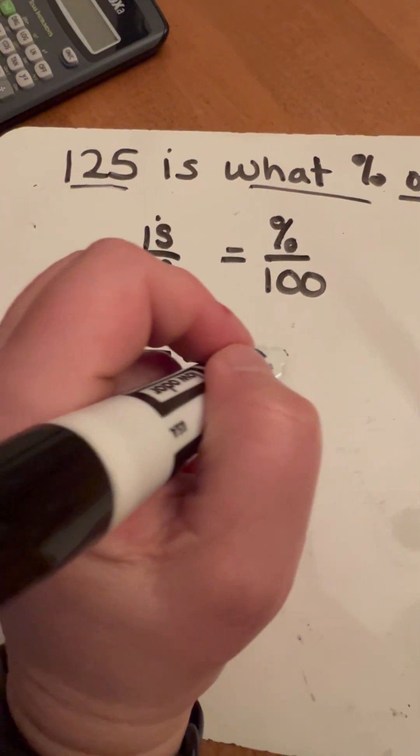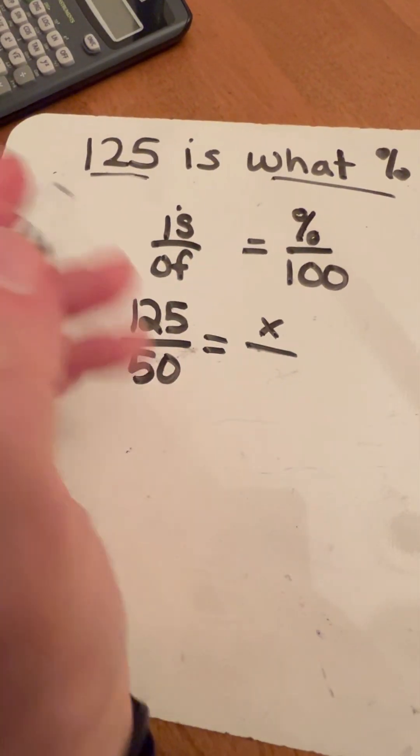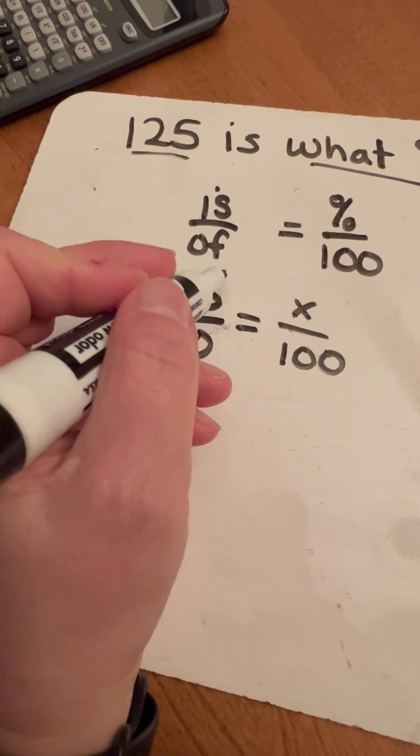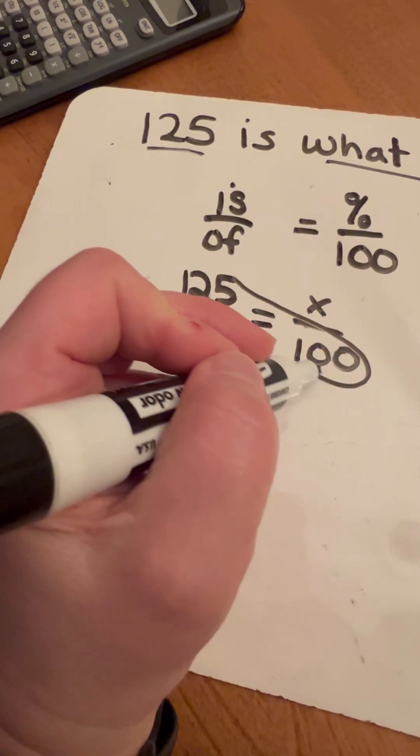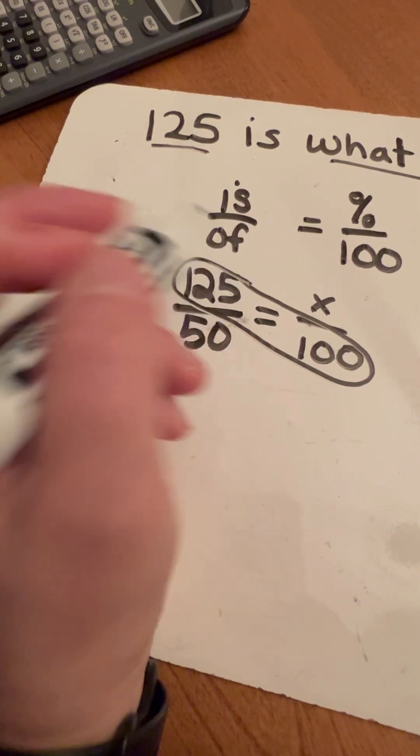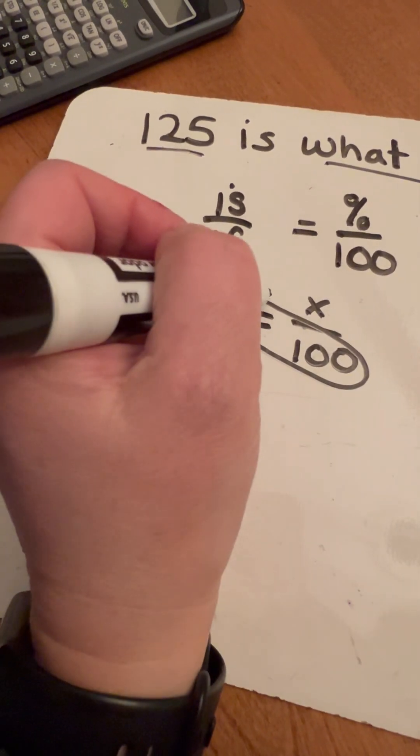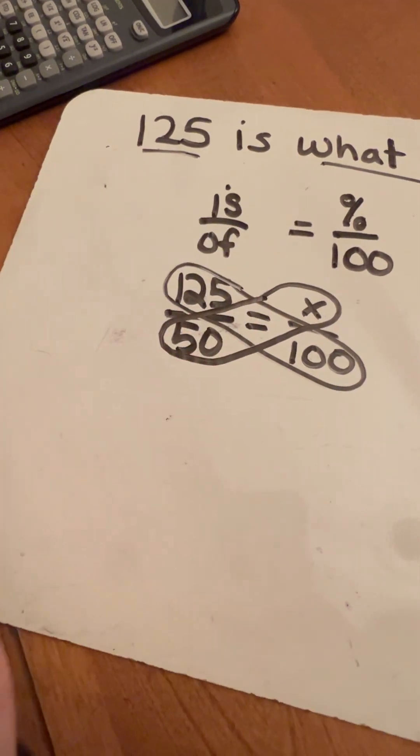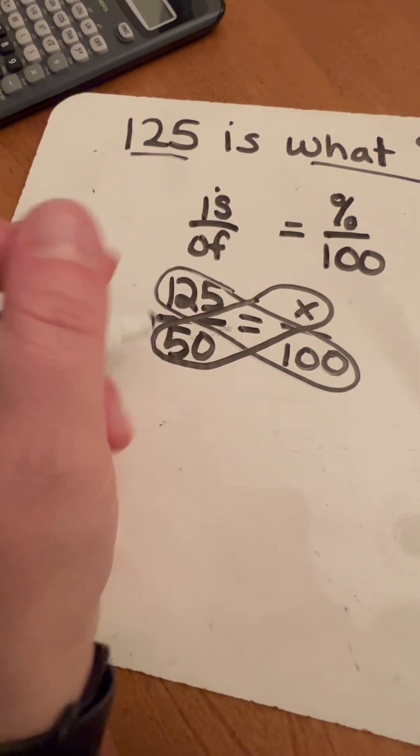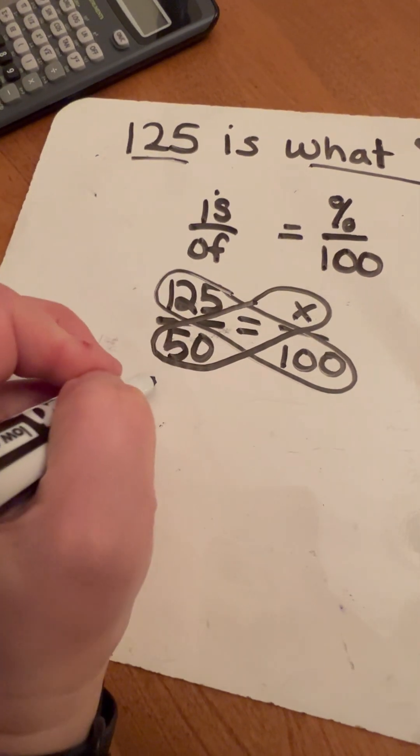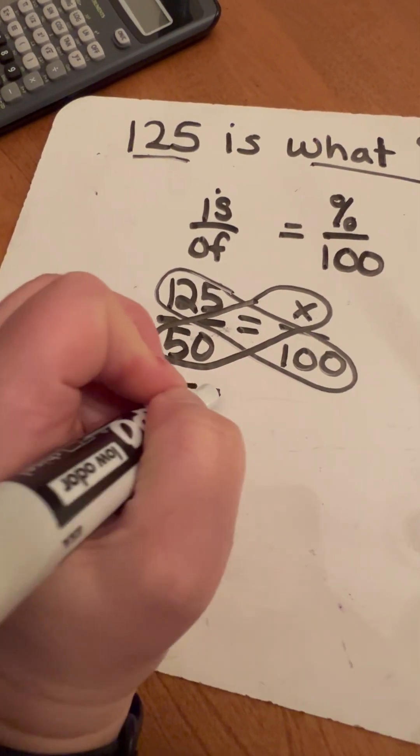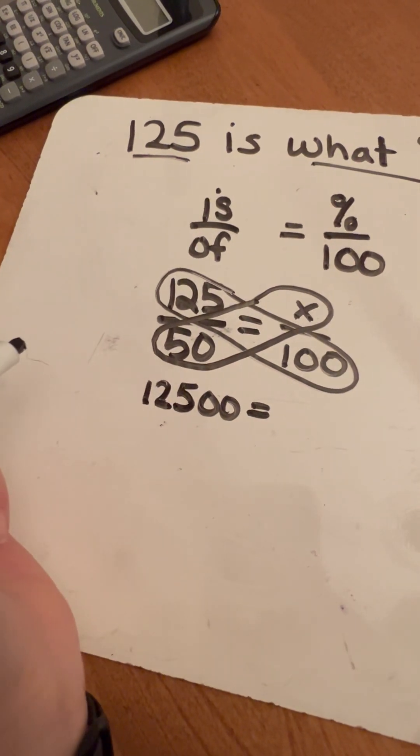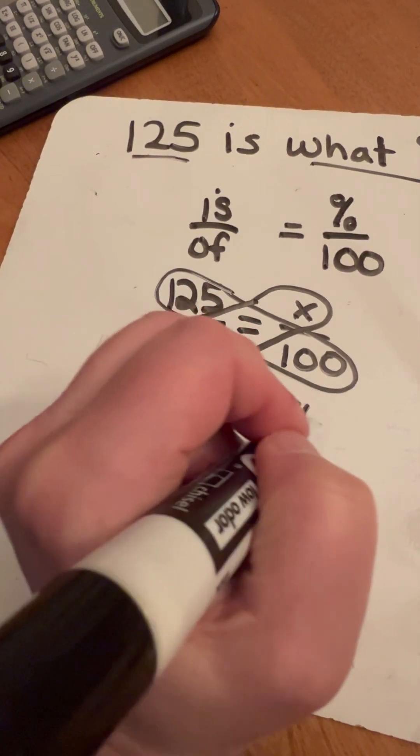So the what percent, we do still have a missing piece. So we're going to call that X and it's still out of 100. So what I'm going to do is I can just do cross multiplication, multiply 125 times 100. We're going to do the same thing over across the other side, 50 times X. And we're going to multiply 125 times 100, which is going to be 12,500 equals 50 times X or 50X.